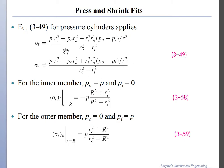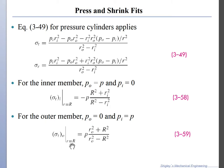For the inner member, the outside pressure is p and the inside pressure is zero, since the pressure acts only at the interface between the two cylinders. The tangential stress evaluated at the interface is minus p times (R squared plus r_i squared) divided by (R squared minus r_i squared). For the outer member, the outer pressure is zero and the inner pressure is p at the interface, so the tangential stress at the interface is p times (r_o squared plus R squared) divided by (r_o squared minus R squared). We now have all the tools to design that system.